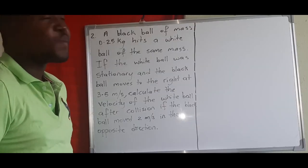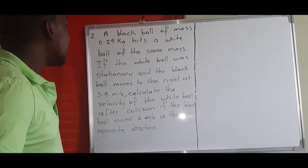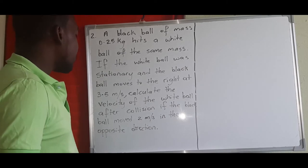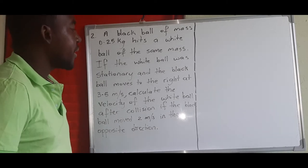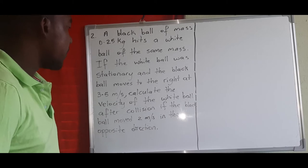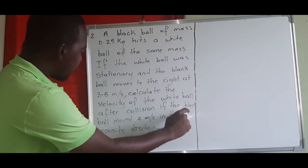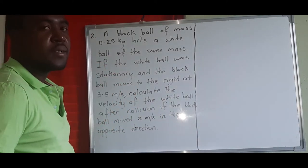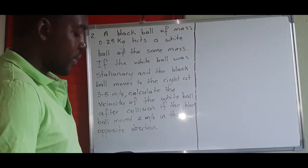Question two: a black ball of mass 0.25 kilograms hits a white ball of the same mass. The white ball was stationary, and the black ball moves to the right at 3.5 meters per second. Calculate the velocity of the white ball after the collision, given that the black ball moved at 2 meters per second in the opposite direction. Again, the first thing we do is determine the collision type. Since both balls have their own separate velocities after the collision, this is an elastic collision.